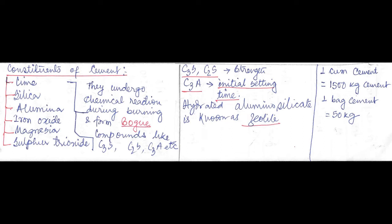these constituents undergo chemical reaction and form compounds like C3A, C2A, C3A, etc. C3A is tricalcium silicate and dicalcium silicate is C2A. They contribute towards the strength of cement, whereas tricalcium aluminate contributes towards the initial setting time of cement.